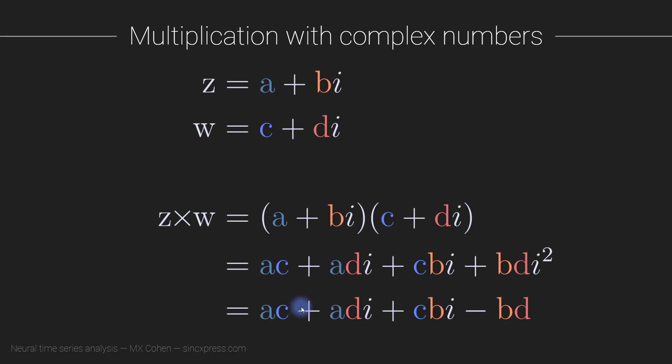So this simplifies a little bit to minus B times D. So we still do end up with a complex number that has a real part containing, in this case, A times C and minus B times D. And an imaginary part, which is the cross term. So A times Di plus C times Bi.